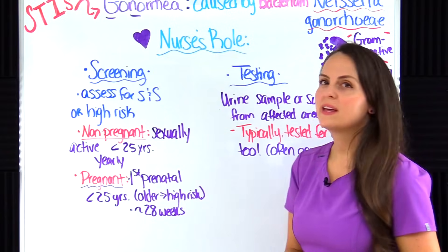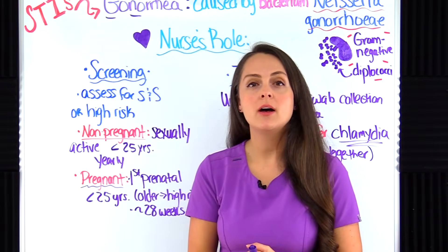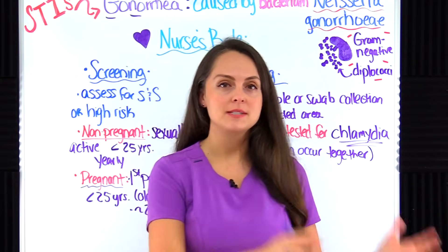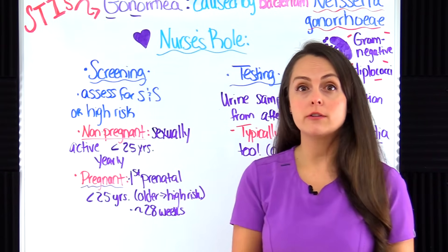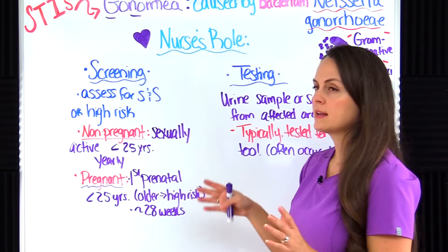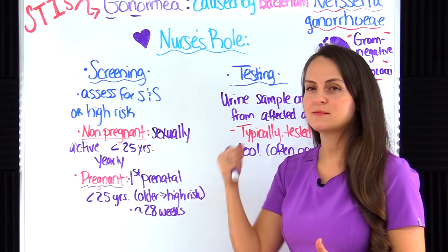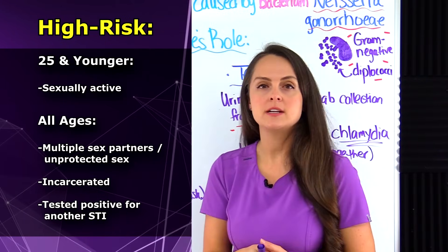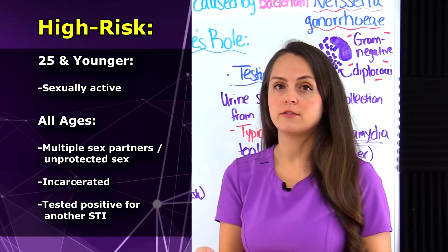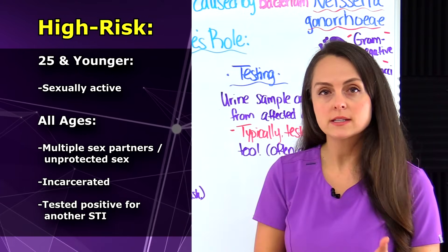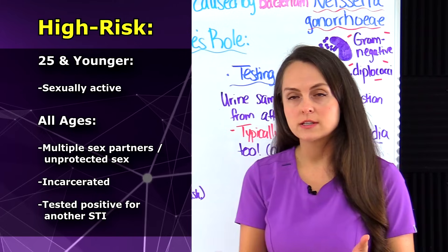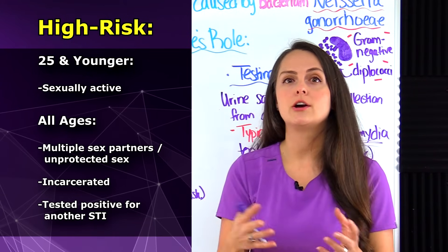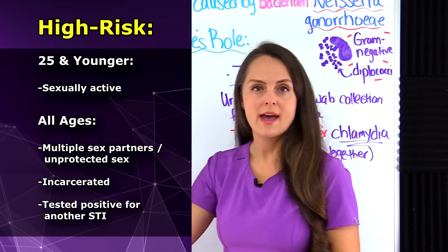Now let's talk about the nurse's role with this STI. As a nurse, we play a huge role in identifying patients who have signs and symptoms associated with gonorrhea, getting them tested, and if positive, getting them treatment — because fortunately there is a cure. For screening, assess patients for the signs and symptoms from the CLAP mnemonic, particularly those at high risk: young patients who are sexually active aged 25 or less, and regardless of age, anyone with multiple sex partners, not using protection, who are incarcerated, or have tested positive for an STI. Gonorrhea and chlamydia often occur together, so if a patient has one STI, test for the other as well.